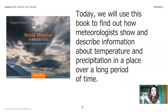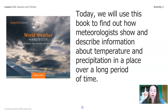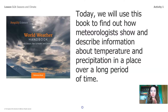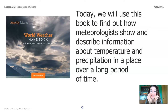Today we're going to use this book to find out how meteorologists show and describe information about temperature and precipitation in a place over a long period of time. Quick pop quiz — do you remember the word that means information about temperature and precipitation in a place over a long period of time? It starts with the letter C. The word is climate. The climate of a place is the weather over a long period of time.